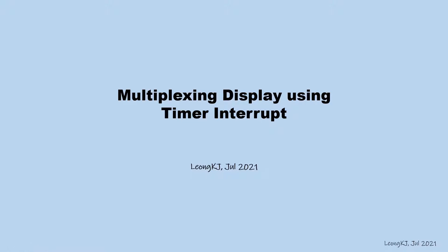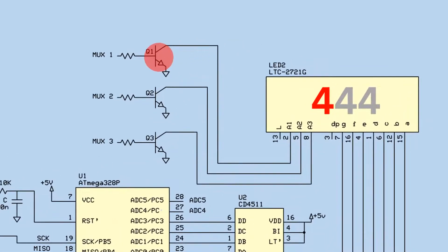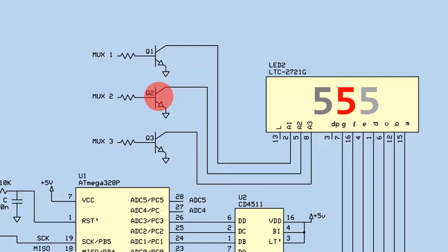This is the three-digit multiplexing display circuit. The multiplexing transistors control which digit of the three-digit display will turn on. The first transistor turns on the first digit, the second transistor turns on the second digit, and the third transistor turns on the third digit. The cycle is then repeated.